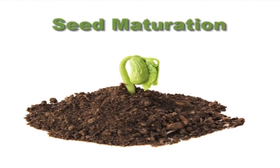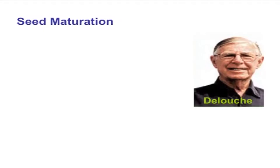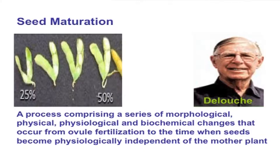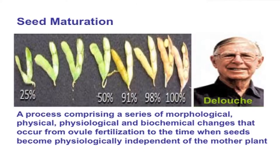We discussed about the role of seeds and their importance in agriculture, their formation, and some of the appendages attached to the seed. Now let us go on to the most important topic of this session: seed maturation. A scientist, Alex Delouche, in 1971 defined seed maturation as a process comprising a series of morphological, physical, physiological, and biochemical changes that occur from ovule fertilization to the time when seeds become physiologically independent of the mother plant.